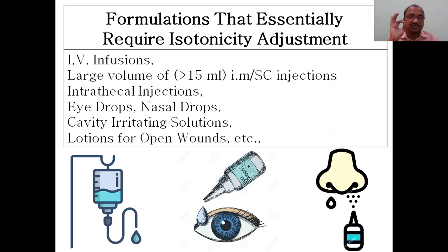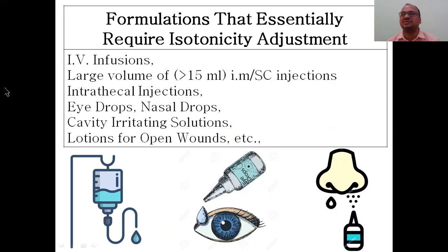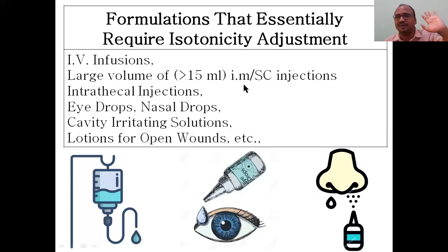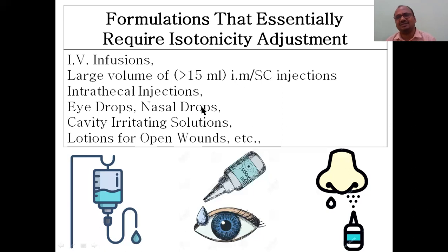These are the formulations which essentially require isotonicity adjustment. After making a very good formulation, you have to adjust the isotonicity. First, IV infusion — because we are giving a large volume directly into the blood. It mainly requires adjustment. Any large volume more than 15 ml, whether IM injection, IV injection, or subcutaneous injection, requires adjustment. Intrathecal injection, given before surgery, also requires it. Eye drops are compulsory — if not adjusted, the upper layer of the skin will be eradicated.